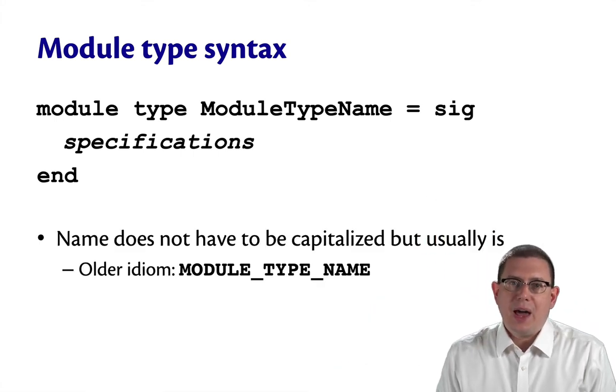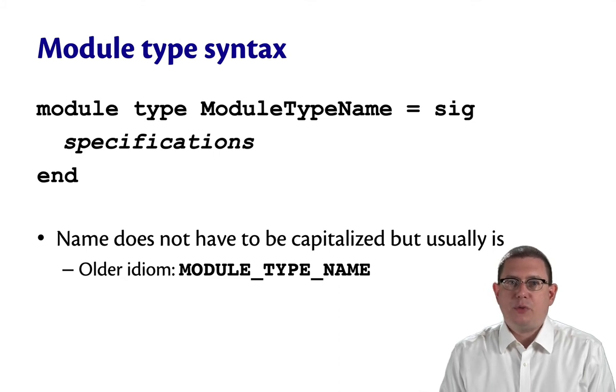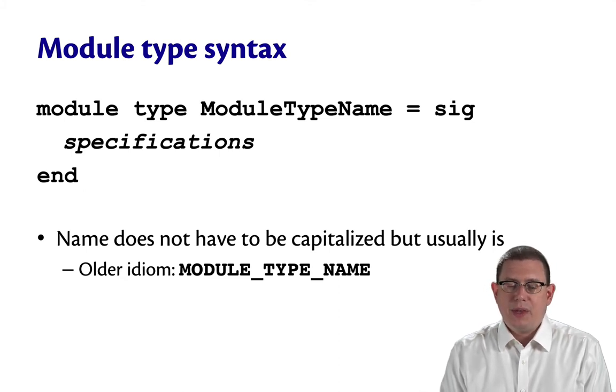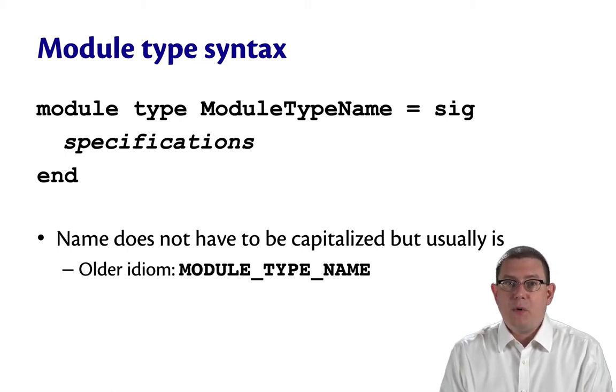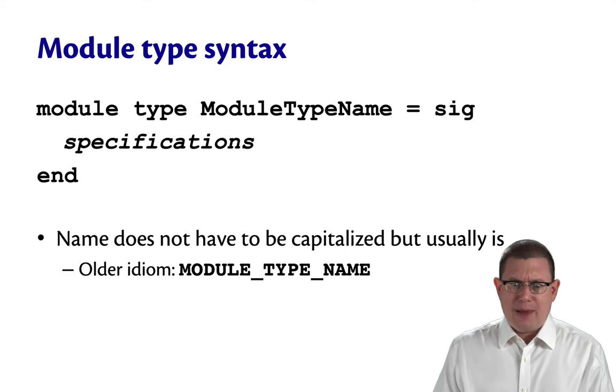Curiously, the name does not have to be capitalized for a module type, unlike a module, but it usually is for consistency. There is an older idiom that you might still see in some code bases, which is all caps and underscores. We tend not to use that anymore. It just kind of looks like your code is yelling at you and no one likes to be yelled at. MODULE_TYPE_NAME.